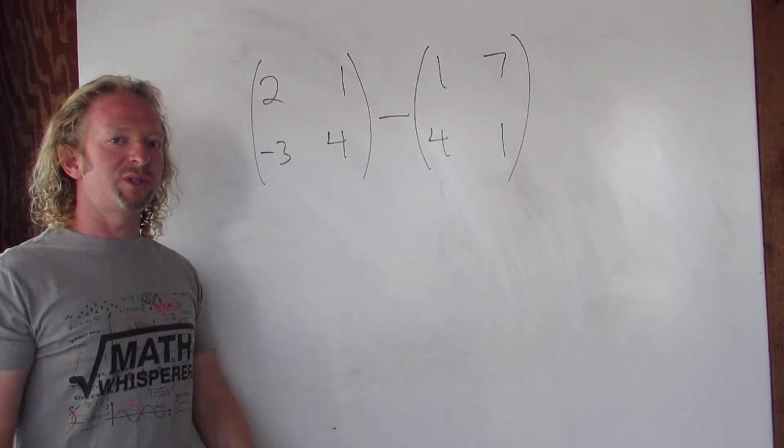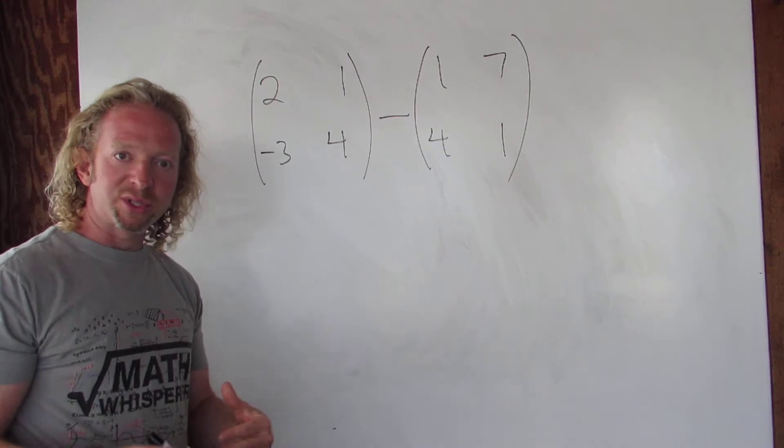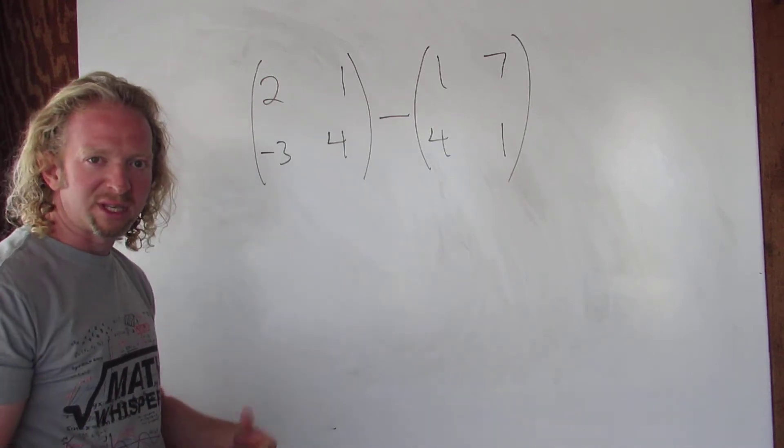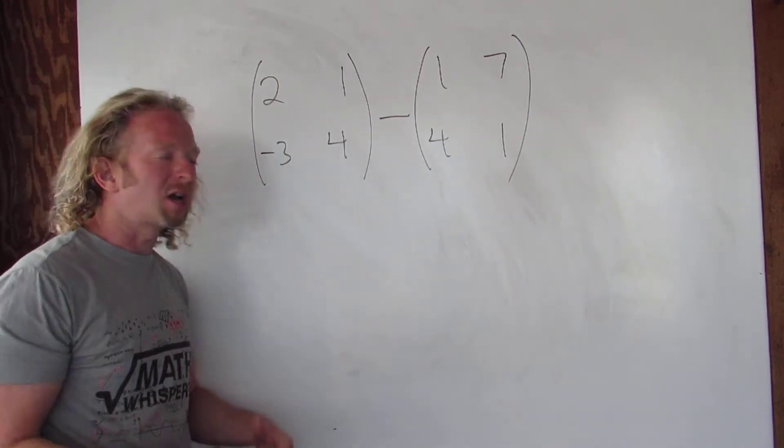In this video, we're going to subtract two matrices. You can only subtract matrices that have the same dimension. What does that mean? It means they have the same number of rows and columns.